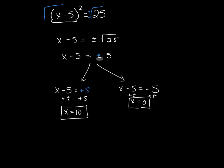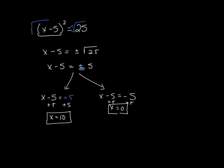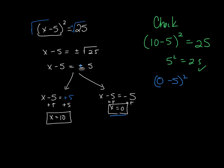Now, we should probably go back and check those. Our check for this is 10 minus 5 squared, does that equal 25, which was our original? And yes, 5 squared is equal to 25. And now, if I check the 0, that would be 0 minus 5 squared, does that equal 25? Yes, because negative 5 squared is equal to a positive 25. So both of those work.